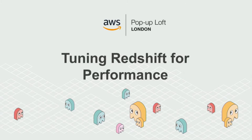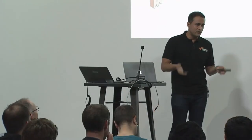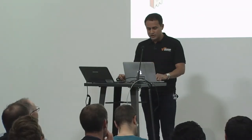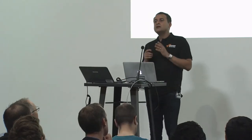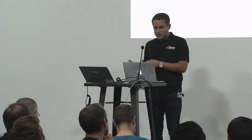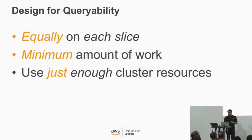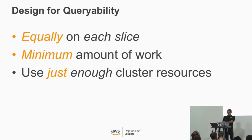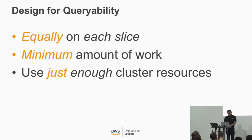When looking at data warehouses, one of the common considerations is performance and how you tune Redshift for performance. In the Redshift world, throughput is not about concurrency but the effective usage of the MPP architecture. The key things to remember: don't skew the work to just a few slices; choose the right distribution key; do the minimum work; don't pull out more blocks off the disk than you need to; and assign just enough memory to your queue or query, otherwise you're wasting valuable resources.